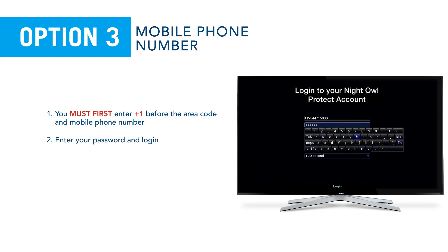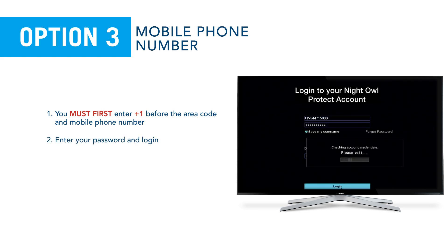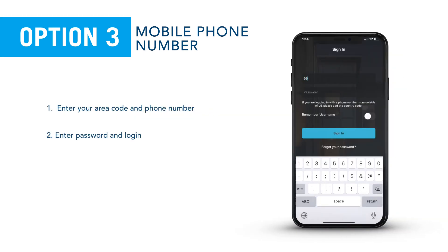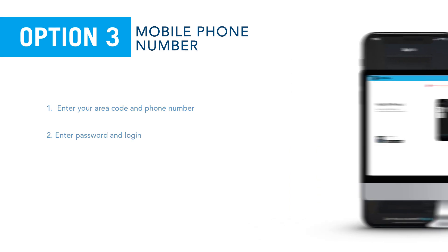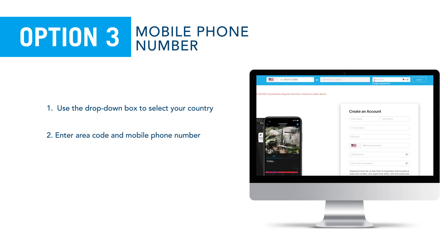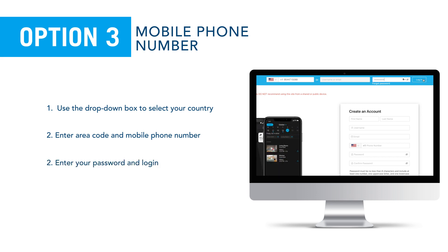Enter your password and log in. To log into the Night Owl Protect app, enter your area code and mobile phone number. For the Night Owl Protect website, use the drop-down box to select your country, then enter your area code and mobile phone number into the phone number field. Enter your password and log in.